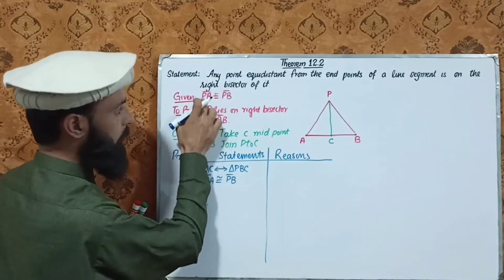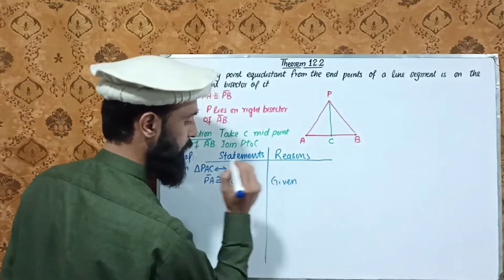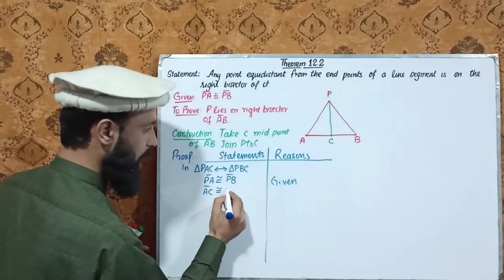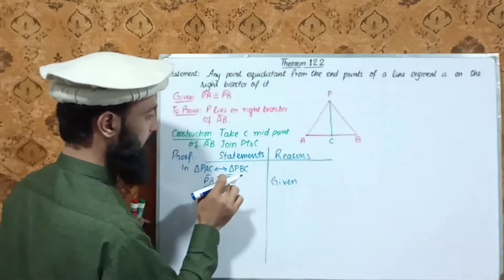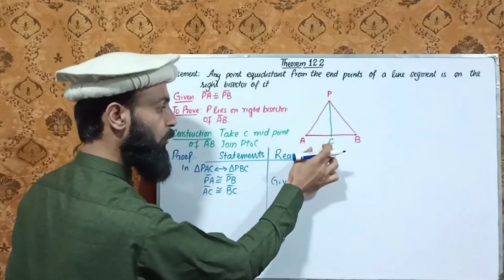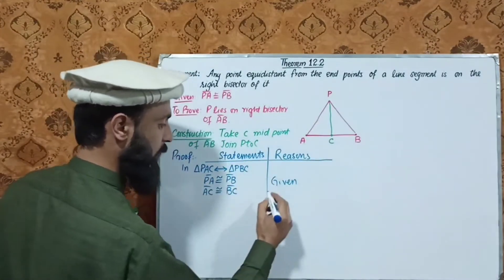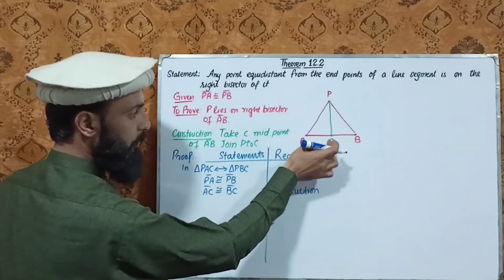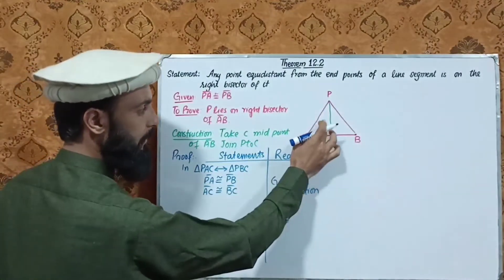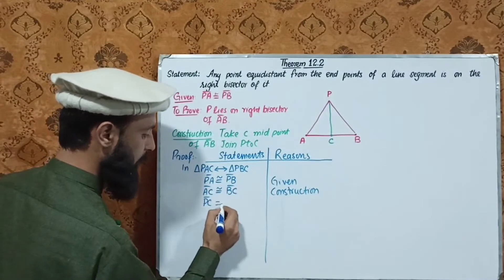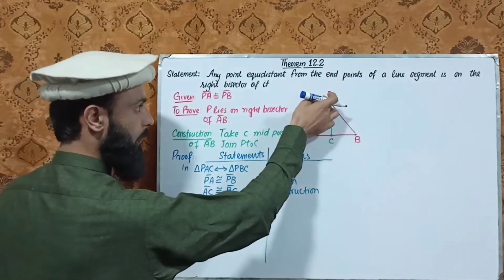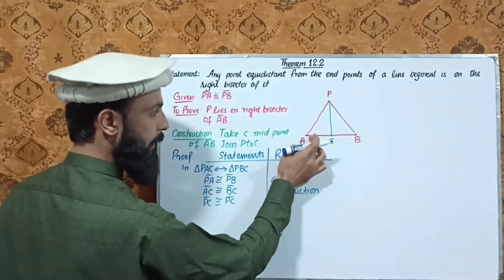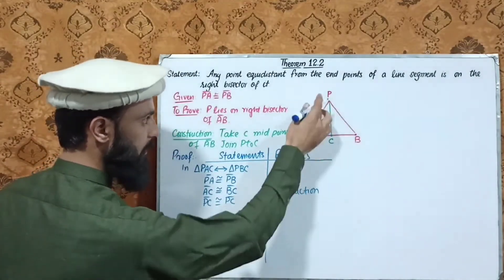By SSS congruency: First, AC equals BC — because C is the midpoint of AB, by construction. Second, PA equals PB — this is given. Third, PC equals PC — it is common to both triangles. Therefore, by SSS, triangle PAC is congruent to triangle PBC.